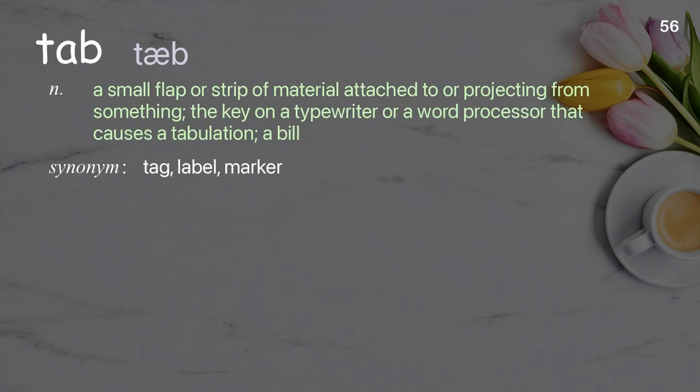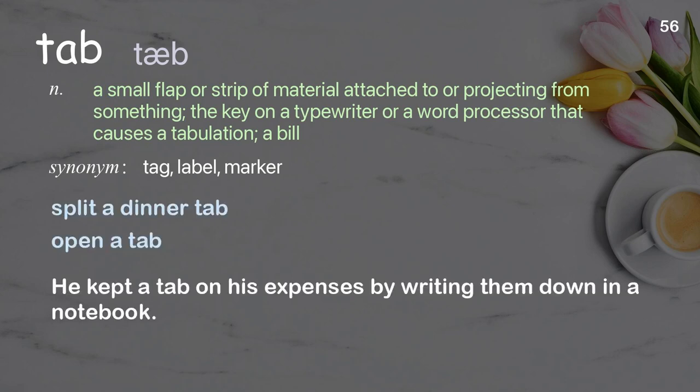Tab: A small flap or strip of material attached to or projecting from something; the key on a typewriter or word processor that causes a tabulation; a bill. Examples: split a dinner tab, open a tab. He kept a tab on his expenses by writing them down in a notebook.